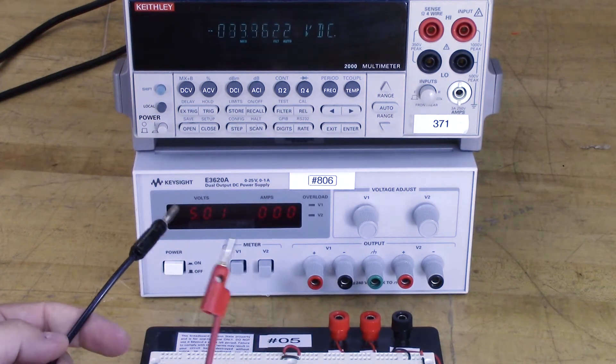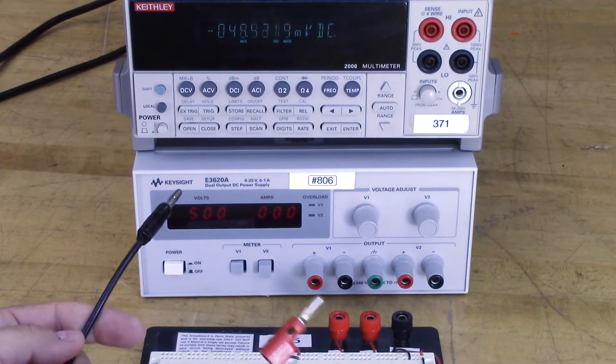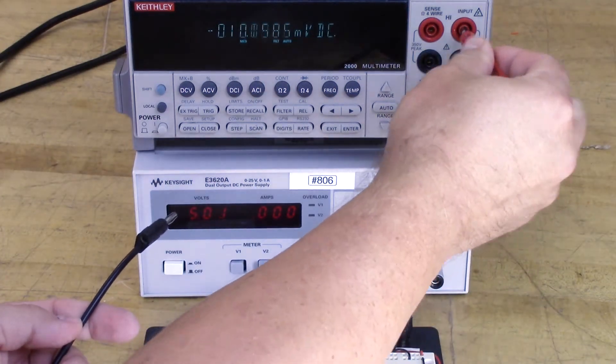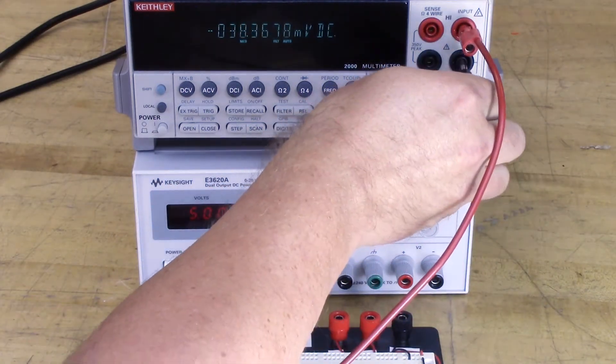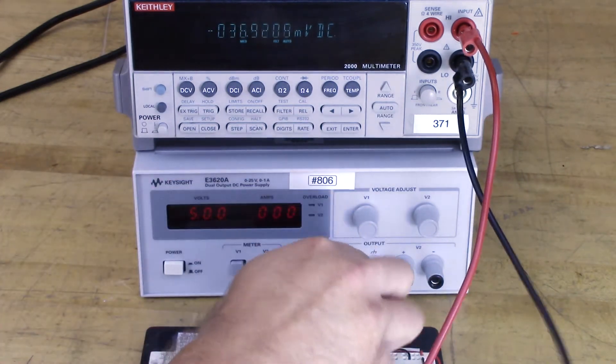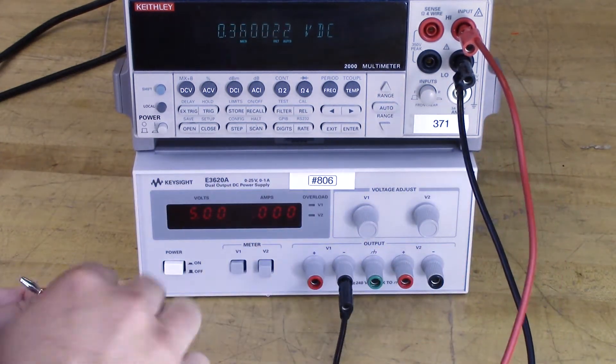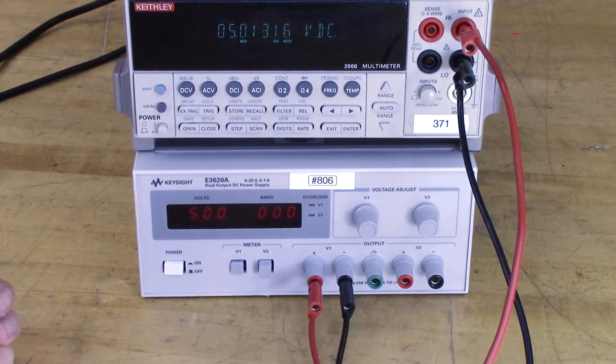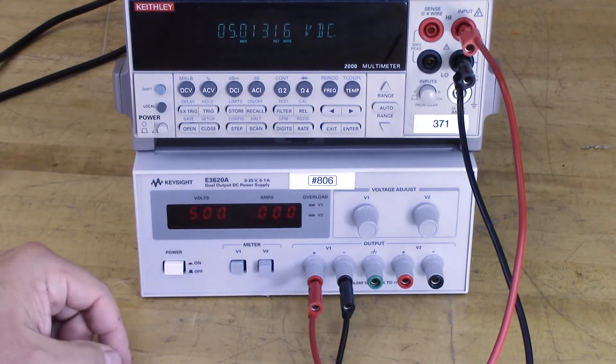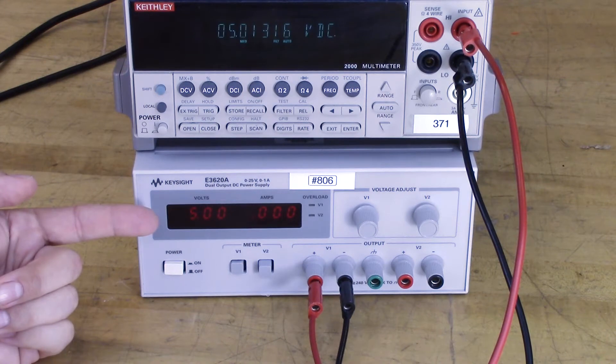All right, now I'm just going to use these patch cords from the multimeter just to measure the voltages. So we're going to connect this to the input and this to the reference. Now that's fairly accurate. I wouldn't worry about 10 millivolts.